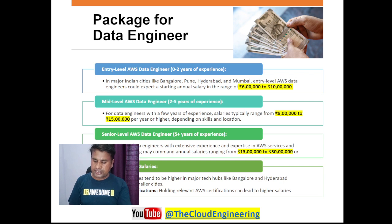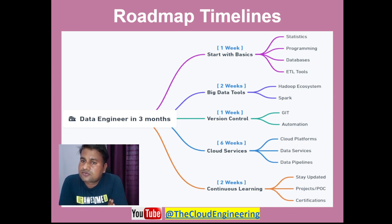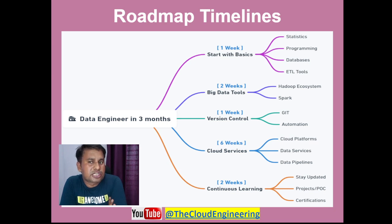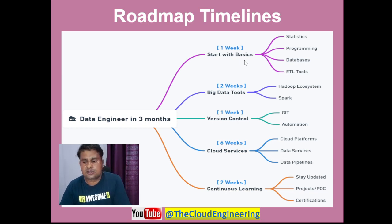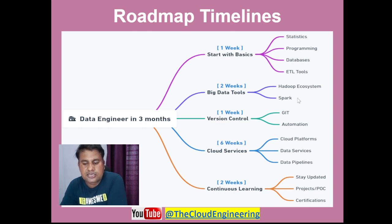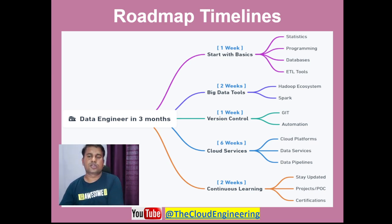Now let's talk about the timelines. How much time should all of this take? Based on my experience training many people on AWS, 3 months should be a good time to be ready as a data engineer. One week can be spent on the basics — statistics, programming, databases — though if you already have that knowledge you can skip that part. Then spend one week on Hadoop and one week on Spark, so you understand how large amounts of data are processed. Version control should take one week — learning how to commit code, and how multiple team members can merge their code.